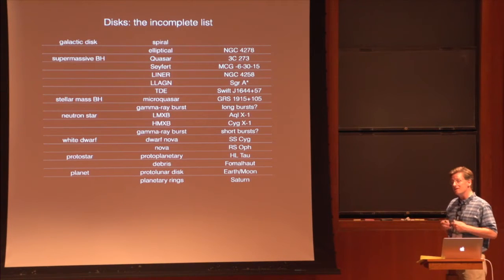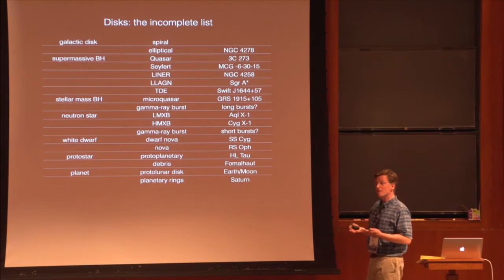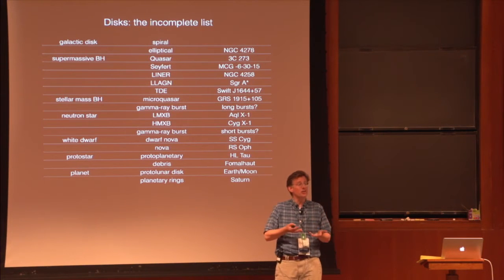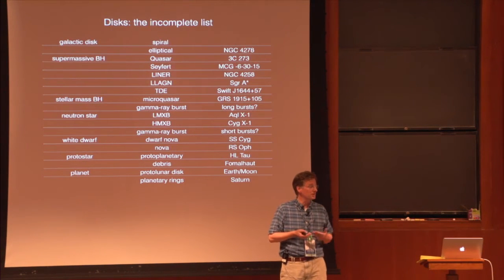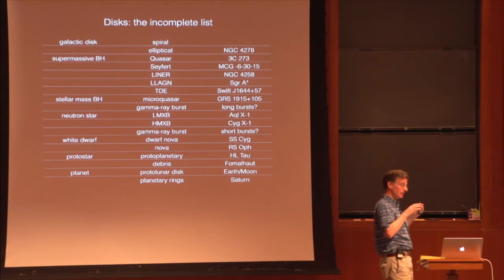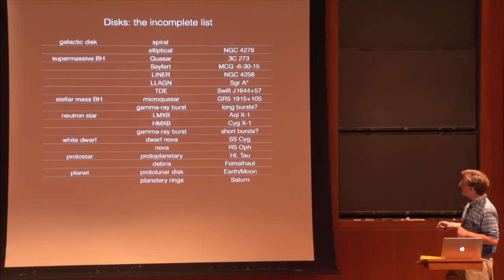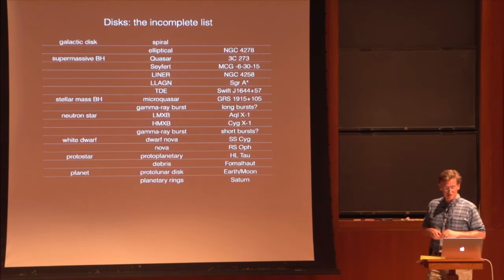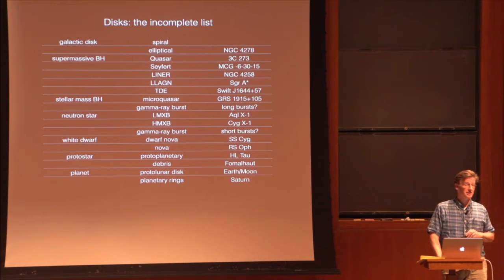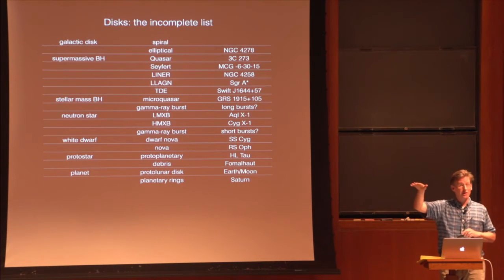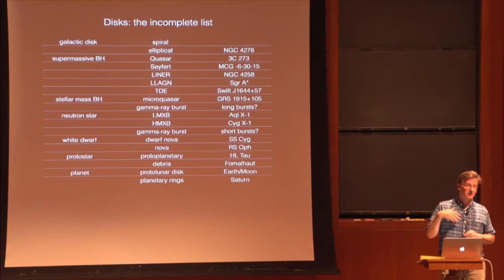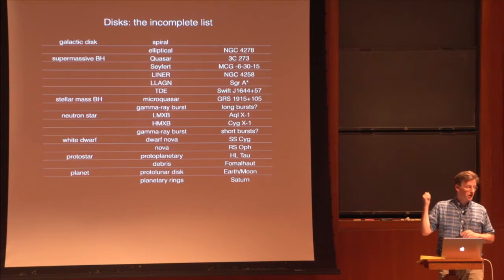Protostars and protoplanetary disks, like the famous HL Tau disk, also produce luminous disks, although in some cases they are observed not because they're generating energy through dissipation of internal turbulence, but because they are illuminated by their central star. There are also disks around planets — the protolunar disk is an example — and debris disks such as Saturn's rings, which have many features of disk systems including density waves.